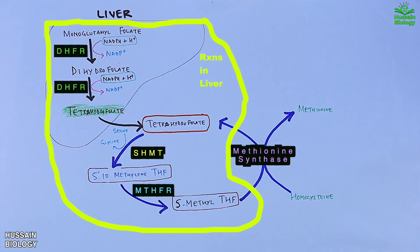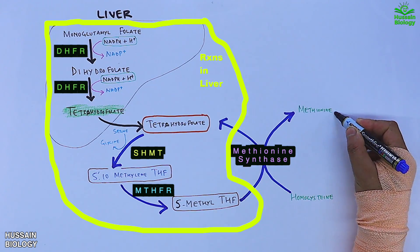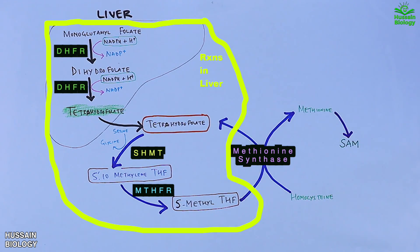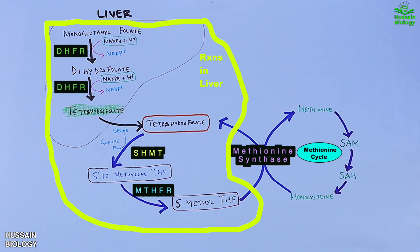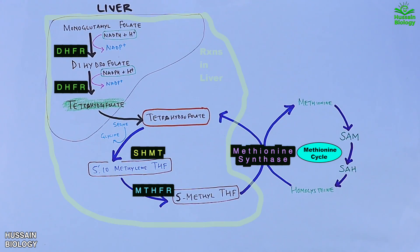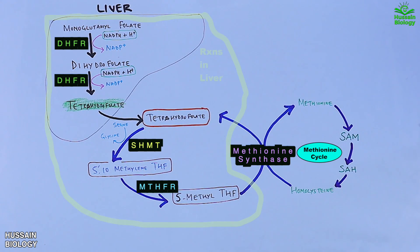The methionine enters cyclic reactions forming SAM, then followed by SAH, and finally homocysteine is regenerated — this forms the methionine cycle. On the other side, we get THF back, or tetrahydrofolate, which forms the folate regeneration pathway.